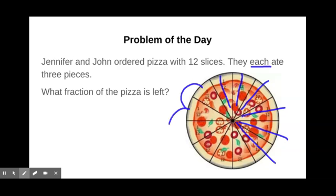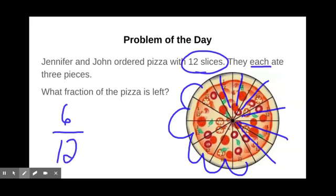How much pizza is left? We can count one, two, three, four, five, six pieces is left. That'll be our numerator. Our denominator of our fraction tells us how many pieces were in the whole thing. And in this case, we remember that the pizza had 12 slices in the whole thing. So we can say that there are six twelfths of the pizza left.